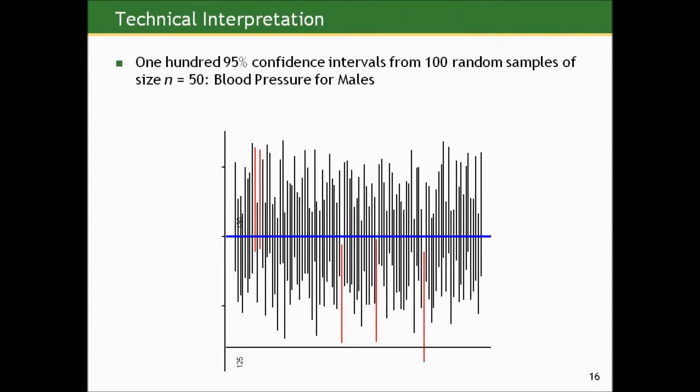Here's a picture showing 100 95% confidence intervals from 100 random samples of size n equals 50 in the blood pressure example. I've put a horizontal line at 125 millimeters of mercury, which is the true mean. You can see that all the intervals colored in black cover the true mean of 125, and there are five intervals in red that do not.